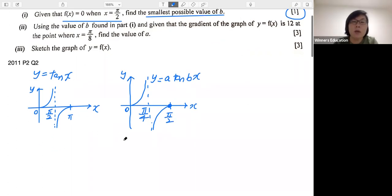So from here, we know that period is equals to π/2. And what has that got to do with b? We know that the relationship will be π divided by b is equals to π/2.